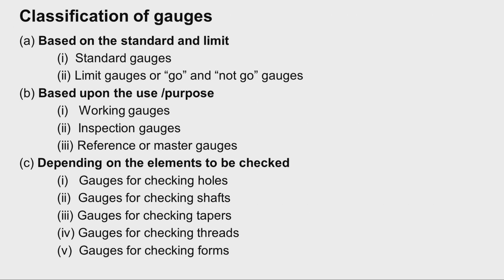How are gauges classified? There are many ways. They are classified based upon the type — whether it is a standard gauge or limit gauge. They are also classified based on purpose: working gauges, inspection gauges, or reference/master gauges. Depending upon the elements to be checked, they are classified as gauges for holes, gauges for checking shafts, tapers, threads, and different kinds of forms.